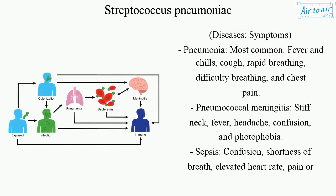Symptoms of pneumonia — the most common disease — include fever and chills, cough, rapid breathing, difficulty breathing, and chest pain.